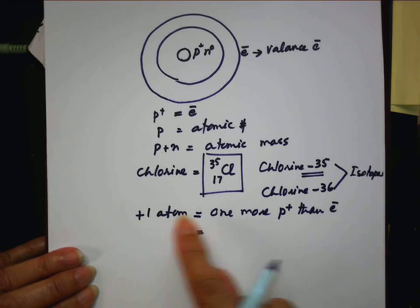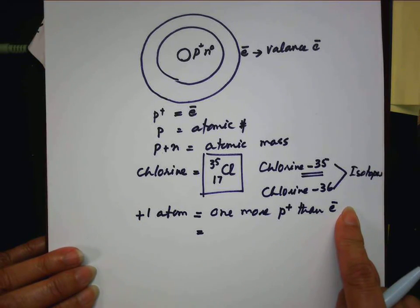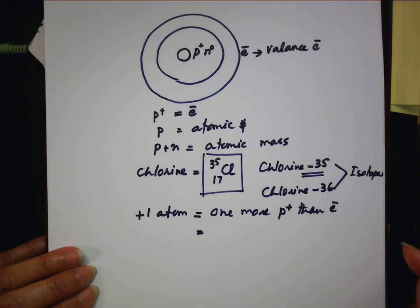Plus two, you have two less electron. Plus three, three less electron. Make sense?